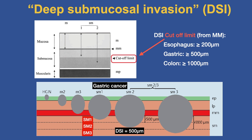As an example, gastric cancer — the DSI is 500 microns. You can see it's just starting to invade into SM2. This is where we don't know if we can achieve a cure, because it may have disseminated into the lymph vessels and blood vessels in the submucosa.